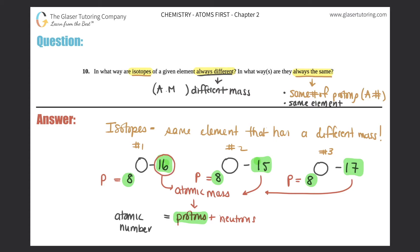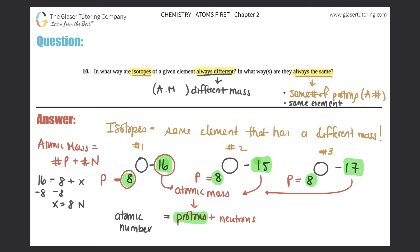For sample one, we have an atomic mass of 16 and eight protons. Since atomic mass equals protons plus neutrons, 16 minus 8 gives us eight neutrons. For sample two with atomic mass 15, we have eight protons and seven neutrons. For sample three with atomic mass 17, we have eight protons and nine neutrons.